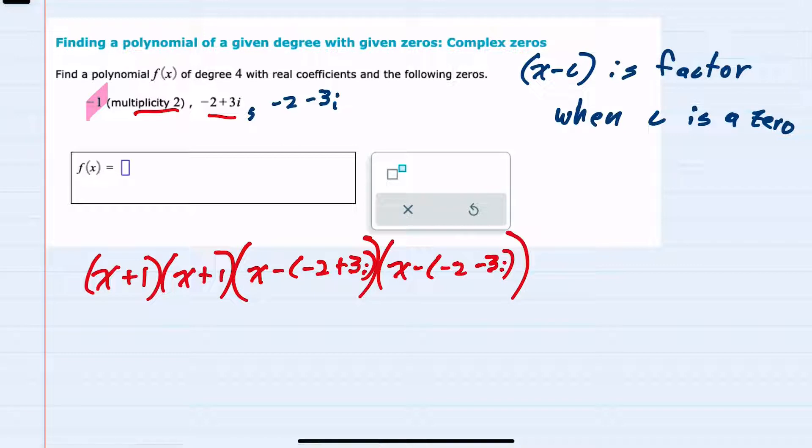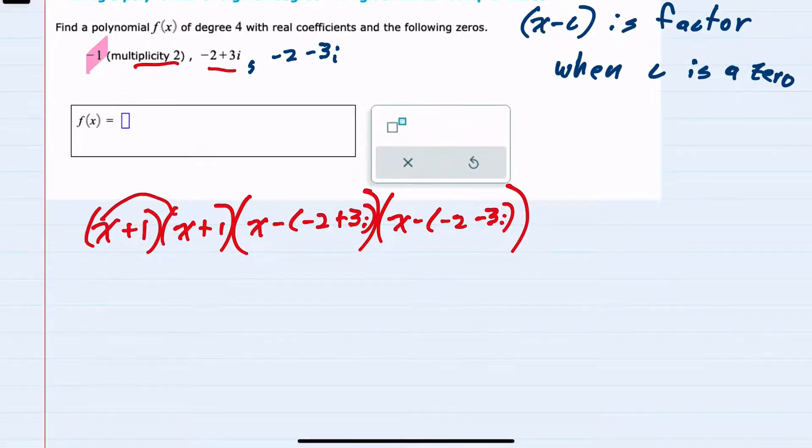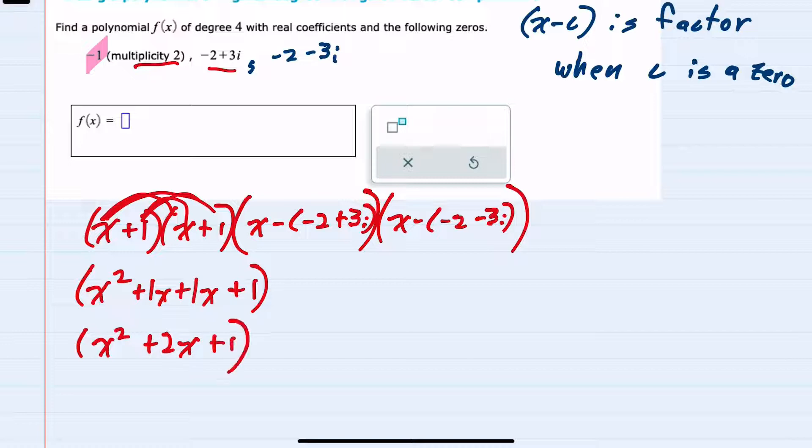From here, I would want to simplify this, and I'll start by multiplying the first two. I can distribute the x, so x times x is x squared, x times 1 is 1x, 1 times x is another 1x, and 1 times 1 is positive 1. So these first two being multiplied will simplify to x squared plus 2x plus 1.